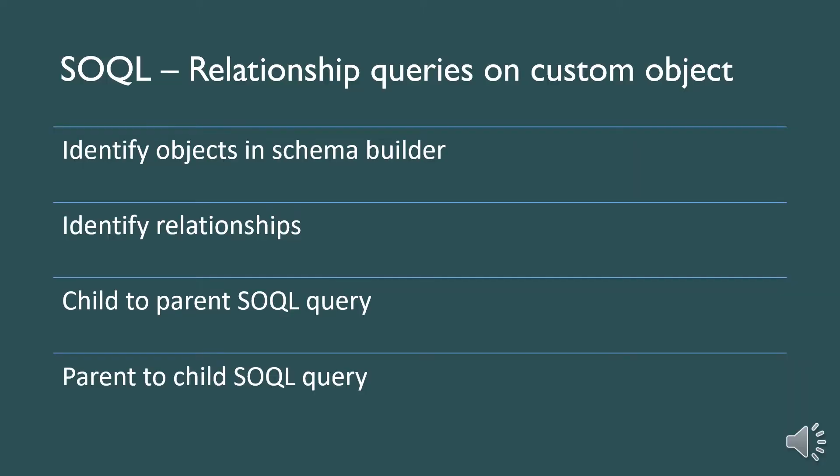Now we'll see how to write SOQL queries on custom objects. The steps are pretty much the same as we saw in the standard objects: identify the objects, identify the relationships, design a child-to-parent SOQL query, and design a parent-to-child SOQL query. While the steps are the same, there is a slight difference in the syntax for the relationship query on custom objects.